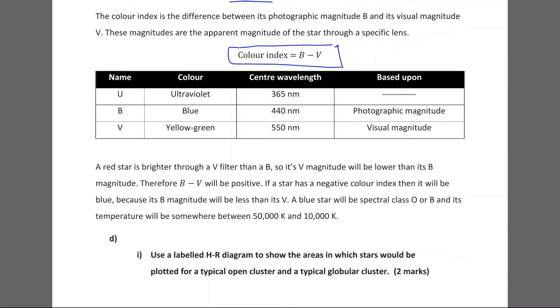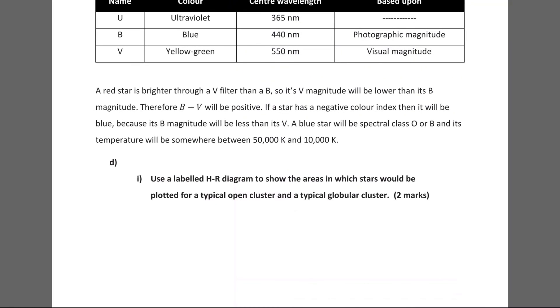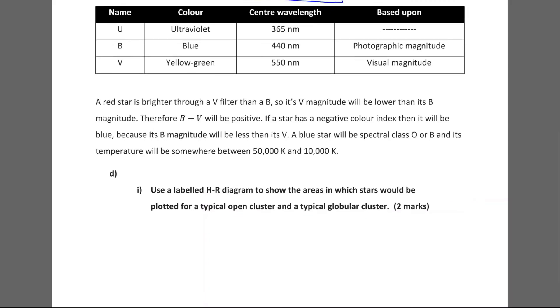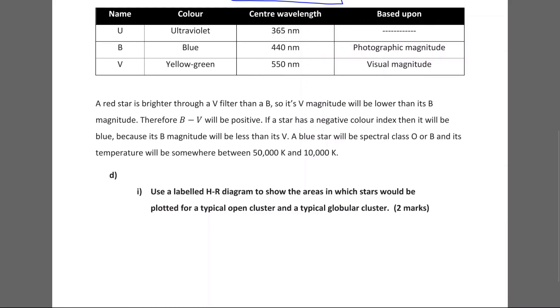So what we have, what people developed, or what scientists developed, is this colour index, which takes the magnitudes of the B and the V, and we take the difference between them to have a numerical value for a star's brightness, based on its brightness through different lenses. So a red star is brighter through a V filter than a B, so its V magnitude will be lower than its B magnitude. And that's because it uses a logarithmic scale, and brighter values, or brighter stars, have a smaller value. So if its V magnitude will be lower than its B magnitude, the difference between B and V will be positive. If a star has a negative colour index, then it will be blue, because its B magnitude will be less than its V. A blue star will be a spectral class O or B, and its temperature will be somewhere between 50,000 Kelvin and 10,000 Kelvin.